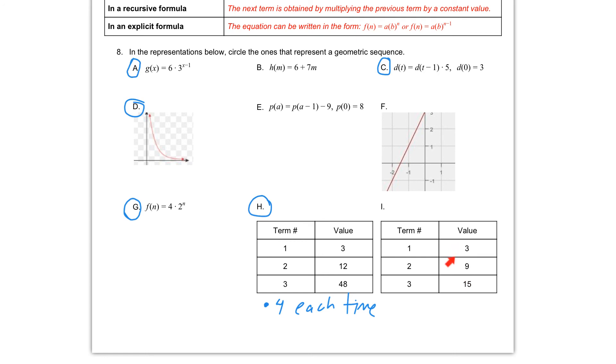If we think about adding, 3 plus 6 gives us 9. 9 plus 6 gives us 15. So we are actually adding 6 each time, which is an arithmetic sequence. So we will not circle letter I.